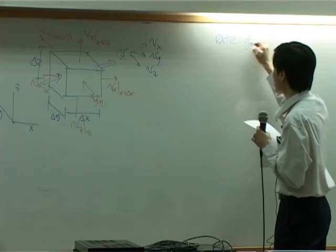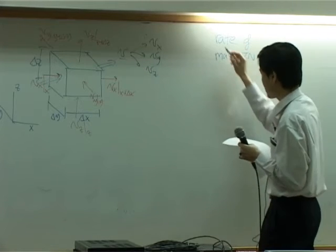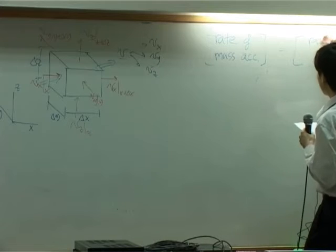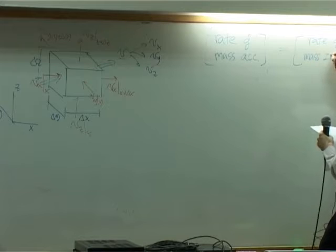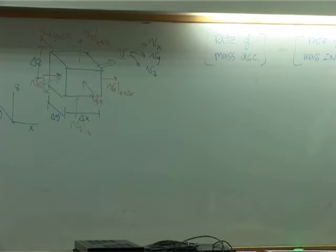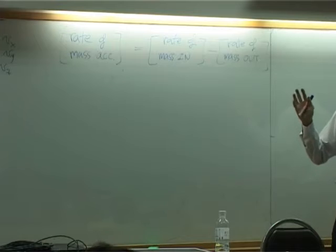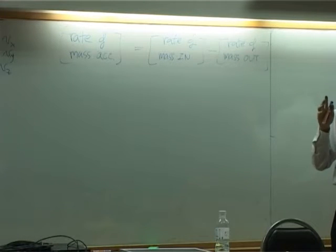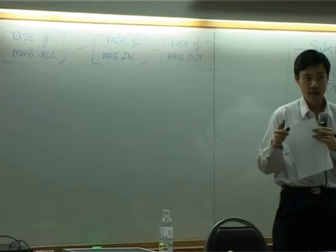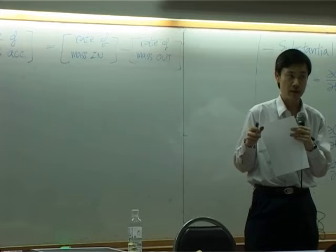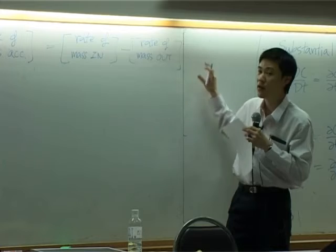The mass balance equation is: the rate of mass accumulated equals the rate of mass in minus the rate of mass out. We do not have generation of mass, because in this first chapter we consider a system that is single component, no reaction, and isothermal. If there is only one single component, there will be no generation of mass.